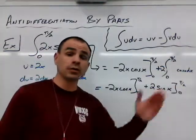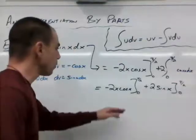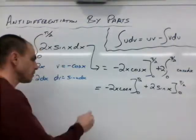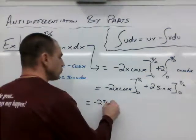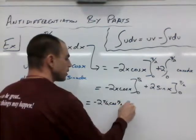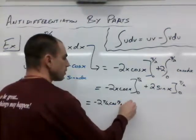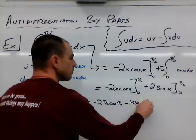Now we evaluate these two expressions right here, and we're going to come up with our final answer. So what happens when we plug in the pi over 2? So we have negative 2 times pi over 2, cosine of pi over 2, and we are subtracting.